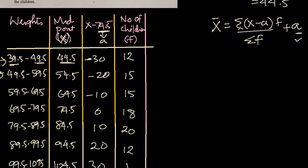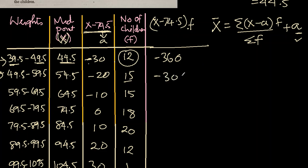So for that, we need sigma x minus a f, that means x minus 74.5 multiplied by the frequency we have. So let's write it here. x minus 74.5 multiplied by frequency. So 12 times minus 30 is minus 360. 15 times minus 20 is minus 300. This will be minus 150. And so on.